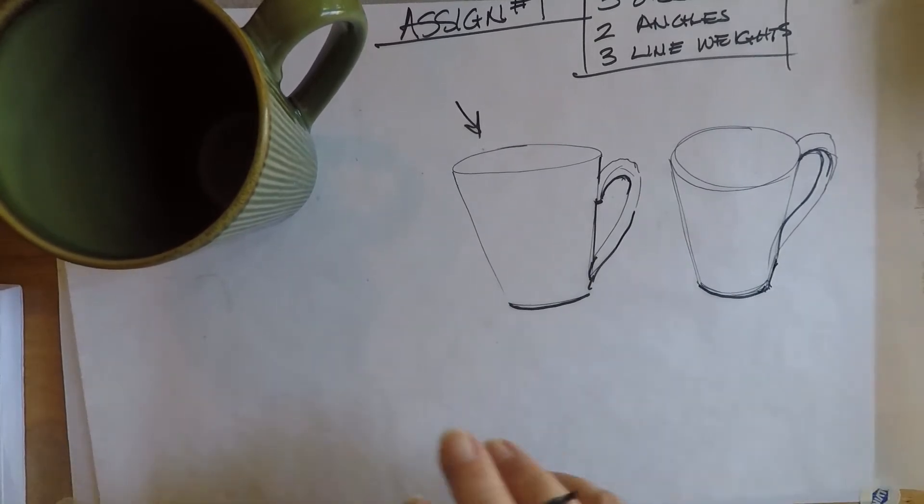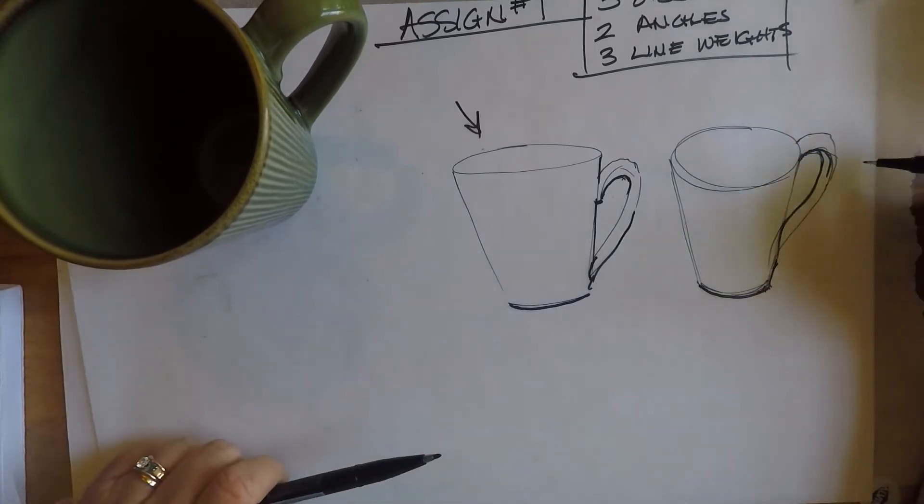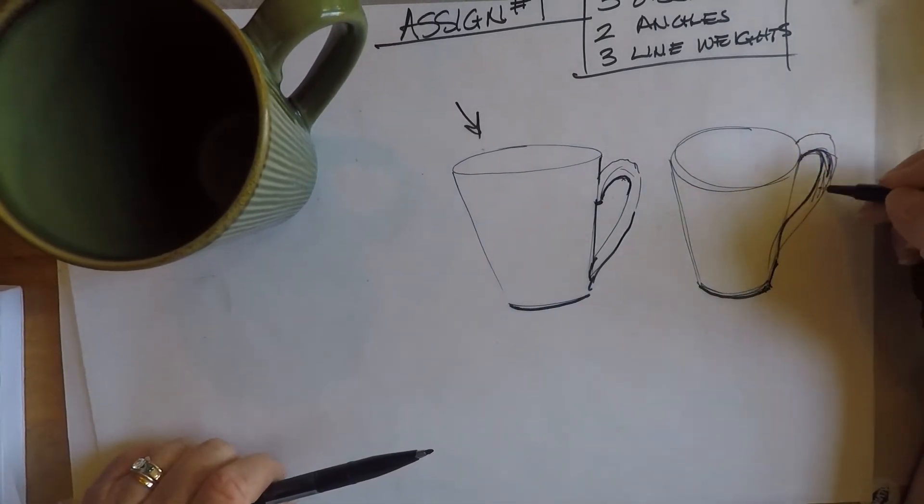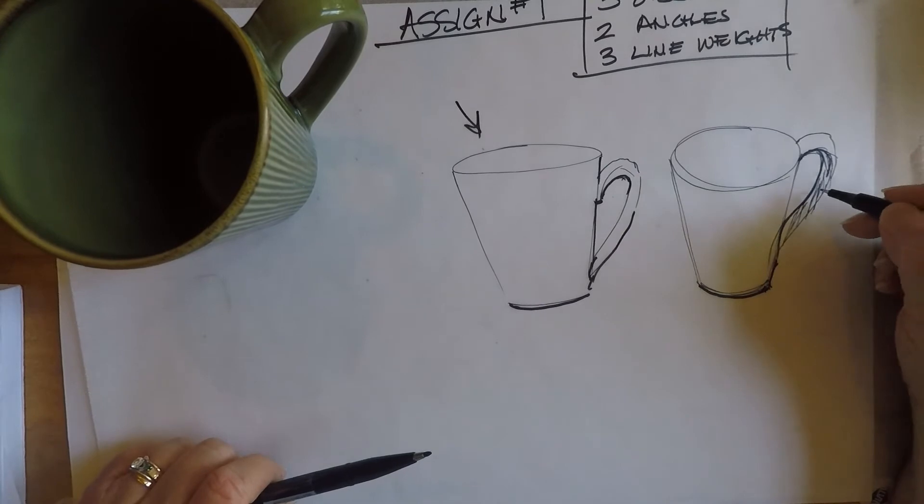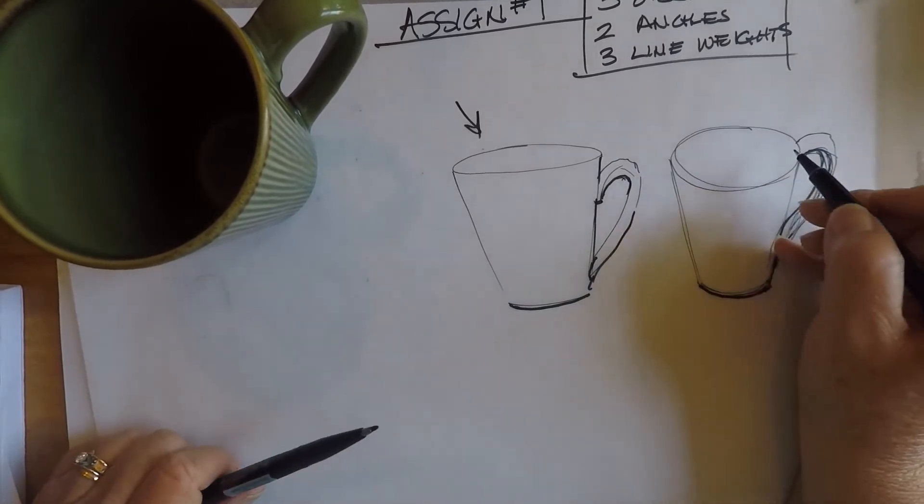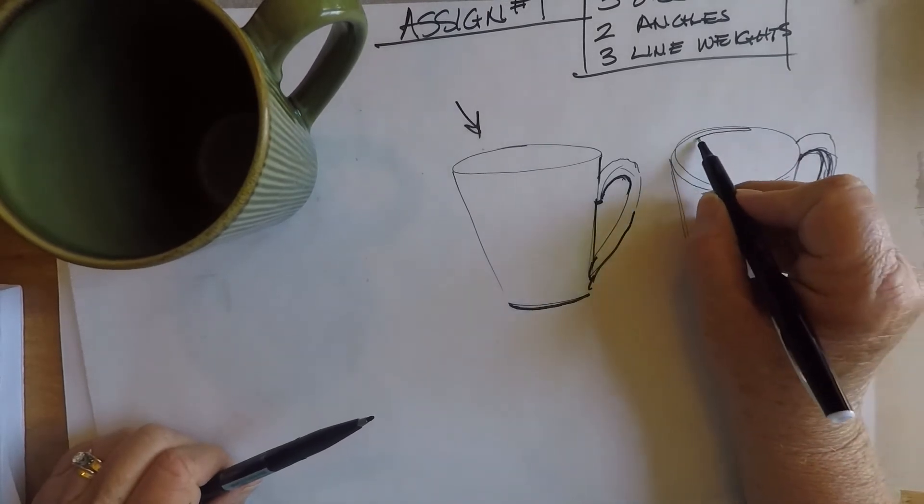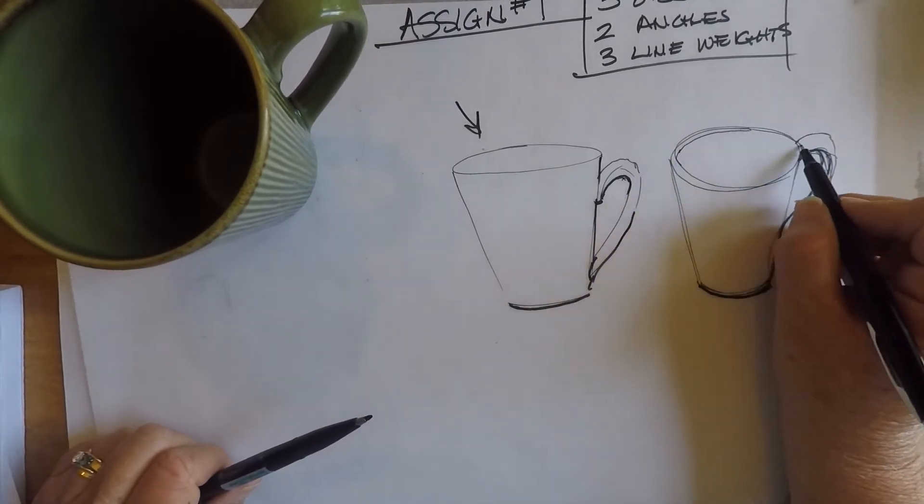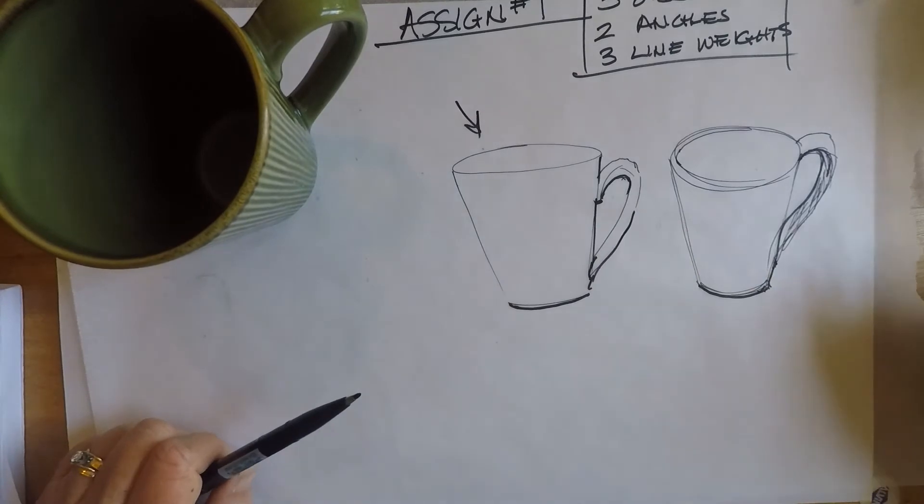And then I'm going to reinforce these underside curves. So the idea again is you're trying to get a feeling of depth on the cup with line alone without using shading or hatching per se. I'm just going to put a little bit of hatching in here just so it looks like the underside of the handle. And then I think I'll also just add a lighter line weight here at the top to kind of imply the rim of the cup.